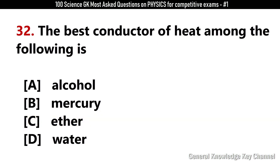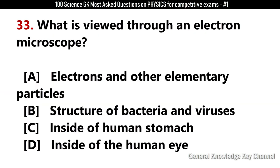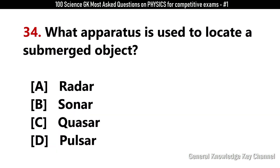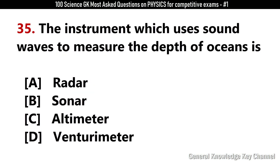The best conductor of heat among the following is? Answer B: Mercury. What is viewed through an electron microscope? Answer B: Structure of bacteria and viruses. What apparatus is used to locate a submerged object? Answer B: Sonar. The instrument which uses sound waves to measure the depth of oceans is? Answer B: Sonar.